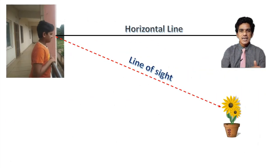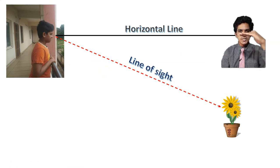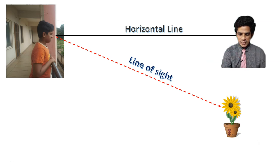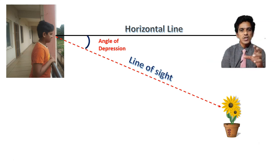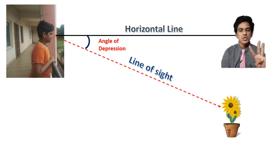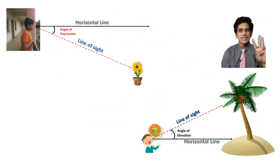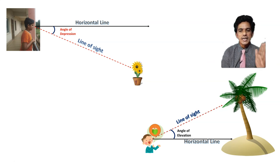Now look at this case: when the line of sight is actually downwards, the horizontal is still the eye-level direction. The angle between these two lines — the horizontal and the downward line of sight — is called the angle of depression. So we have four important terminologies: line of sight, horizontal line, angle of elevation, and angle of depression.